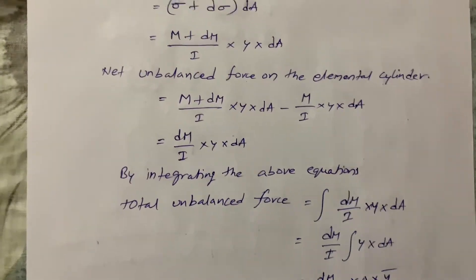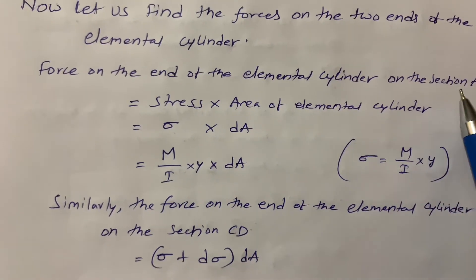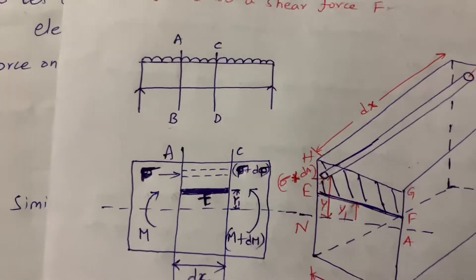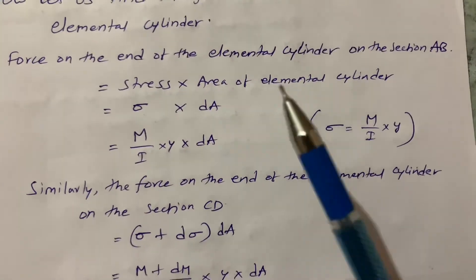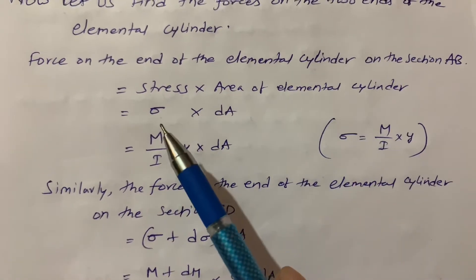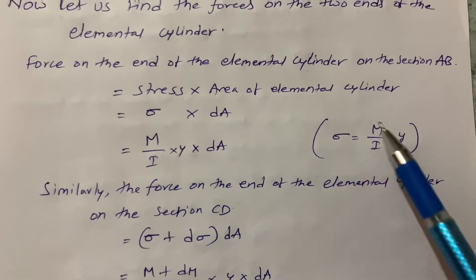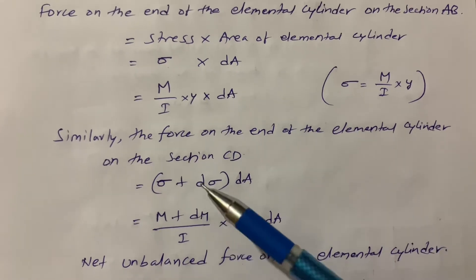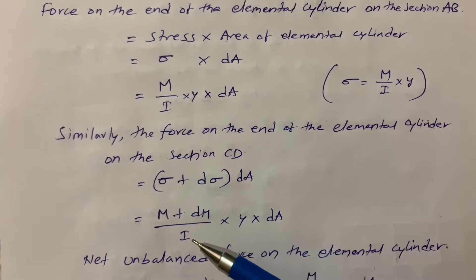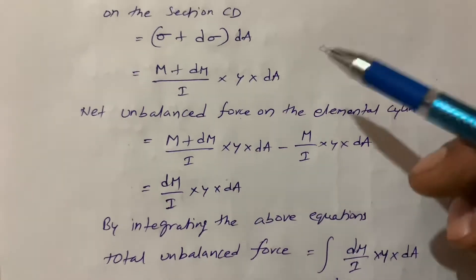We have to calculate the forces on the two ends of the elemental cylinder. Force on the end at section AB equals stress into area, that is sigma into DA, which equals M by I into Y into DA, since sigma equal to M by I into Y. Similarly, at section CD, we find sigma plus D sigma into DA, where sigma plus D sigma equals M plus DM by I.